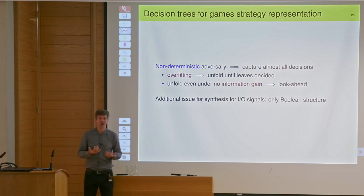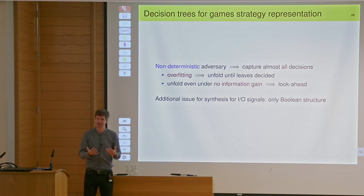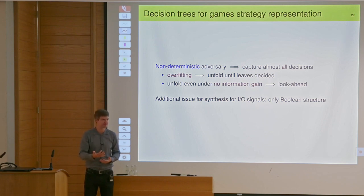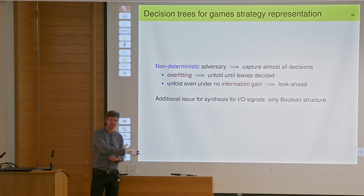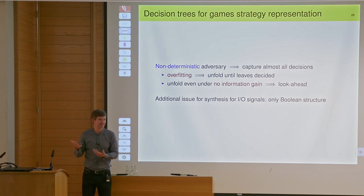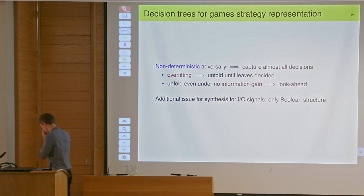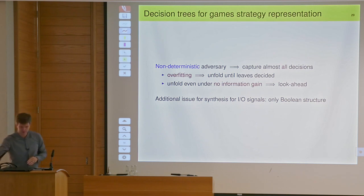So you are actually constructing maybe a decision tree for the strategy, and you really want to overfit your data — you don't want to generalize in any way. You have the strategy already; you don't need to induce what you would do in states that don't even exist. You only want to capture what you already have. So you really want to overfit — something that you definitely don't want to do in the learning area. So we are kind of misusing or even abusing decision trees for our purposes in a way they were never meant to be used.